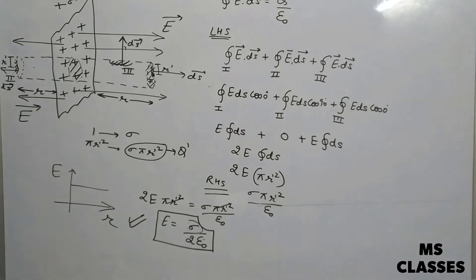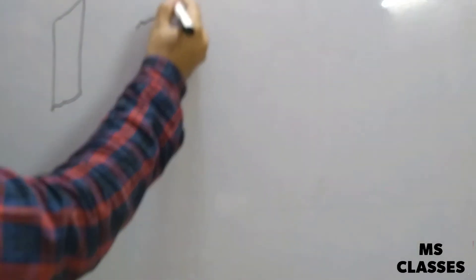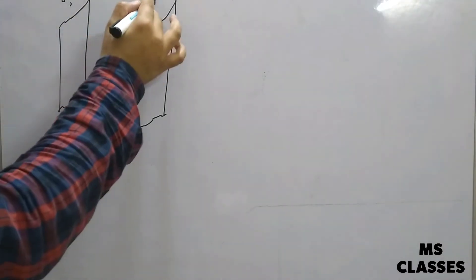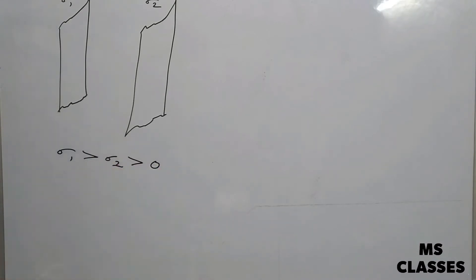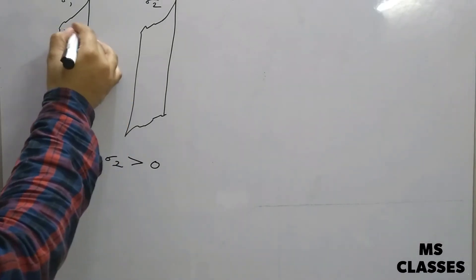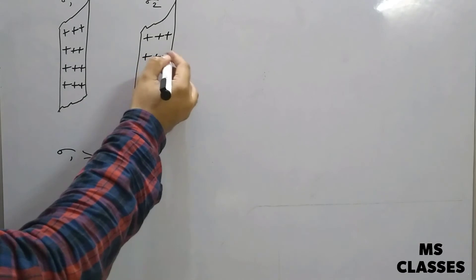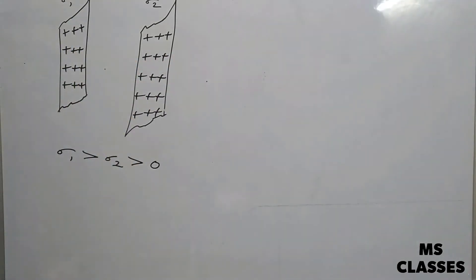Now we will discuss the case of two thin plane sheets. Let's suppose we have two sheets — the first has surface charge density sigma 1 and the second has sigma 2. Here sigma 1 is greater than sigma 2, which is greater than 0, meaning both are positive but sigma 1 is larger. We will consider three points — one to the left, one between the sheets, and one to the right — and find the net electric field at each.